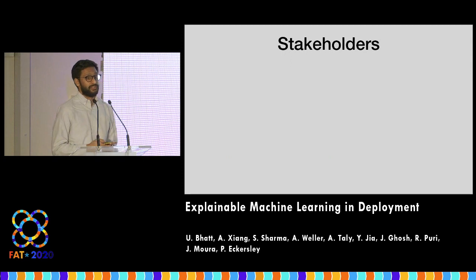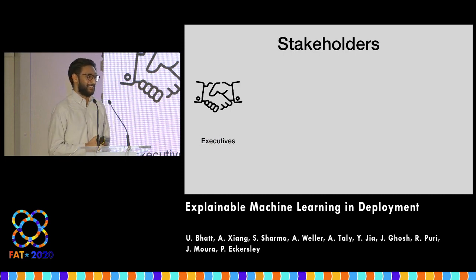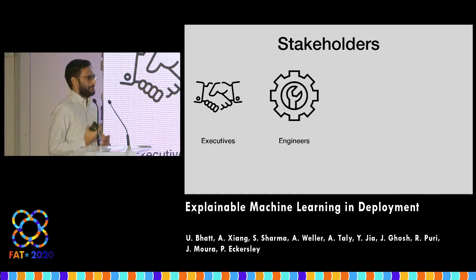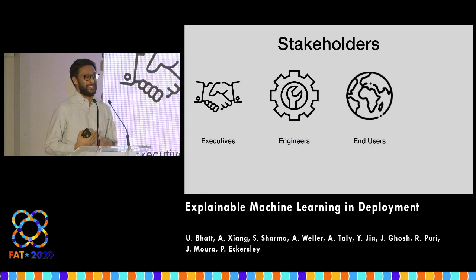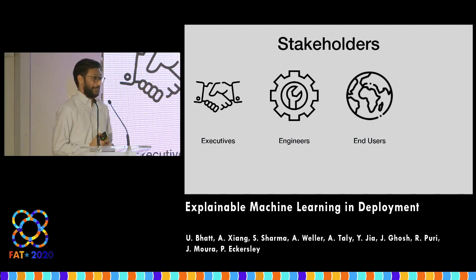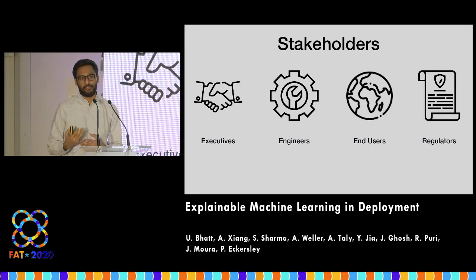The stakeholders we found relevant included executives — some told us the only reason they were working on explainability was because executives had told their engineering teams they needed to claim they were using explainability in their products. We had engineers who had read about explainability through data science blogs and decided to start using these algorithms independently. There are end users who need to know why a loan was denied, and regulators hoping to use explanations as legal justification for why a machine learning model outcome was made.